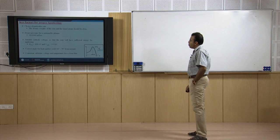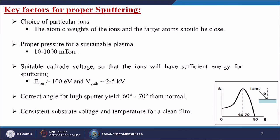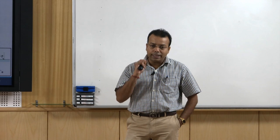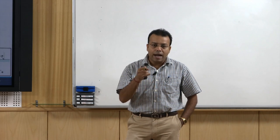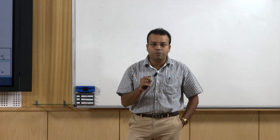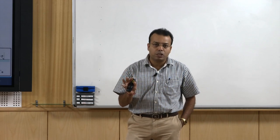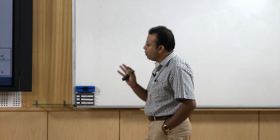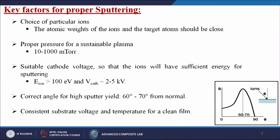What are the key factors for proper sputtering? First is the choice of particular ions — we need to know what ion will hit the other molecules or materials and what the masses of those materials are. If the masses of those materials will be equal, then you will get the best sputtering results. The atomic weights of the ions and the target atoms should be close.